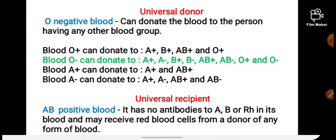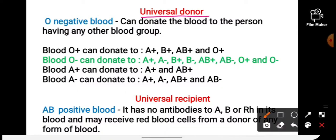Among all 8 blood groups, there is one blood group that is called the universal donor — that is O negative. An O negative person can donate blood to a person having any other blood group, meaning O negative blood can be given to a person of any blood group if that person needs blood. So O negative blood is the universal donor.